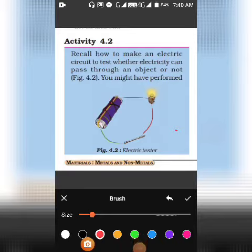Yes children, in this chapter we are reading about properties of metals and non-metals. There is an activity shown here where you can see a circuit. The circuit is connected by a wire and there is a battery.